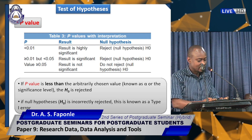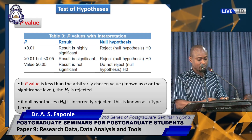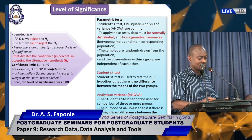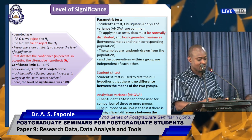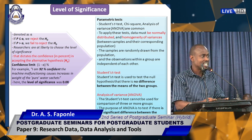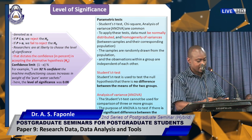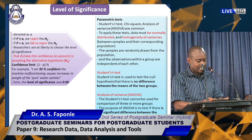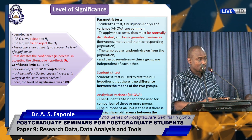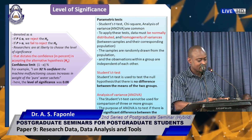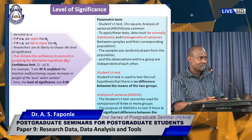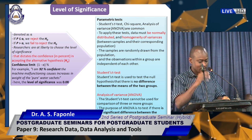If the P value is less than the arbitrarily chosen value known as alpha — the level of significance — the null hypothesis H₀ is rejected. If the null hypothesis is incorrectly rejected, this is known as a Type I error. The level of significance is denoted as alpha. If P is less than or equal to alpha, reject the null hypothesis. If P is greater than alpha, we fail to reject the null hypothesis. Researchers are at liberty to choose the level of significance. The confidence limit is one minus alpha, expressed as a percent.